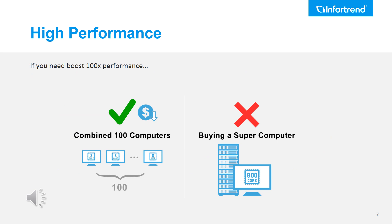Let's stop a moment and think about the value and why we want to use a scale-out storage system. Imagine you need a solution to boost up 100x performance for your company. What's the option for you? First, you could buy a single supercomputer to reach 100x performance. However, the cost for this single super unit will cost tons of the budget. However, combining 100 normal computers together to reach 100x performance is another option, and more importantly, it will cost much lower compared to the first solution.